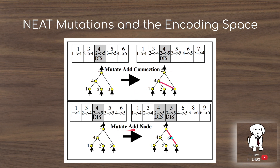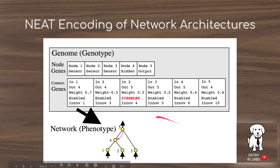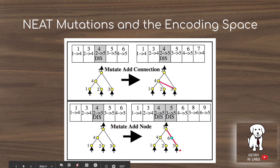Another mutation is to add a node. For example, adding new node six: the connection from three to five is disabled using the disable flag in the connection genotype. Then the connection from three to six and the connection from six to five are both appended to the back of the genotype.